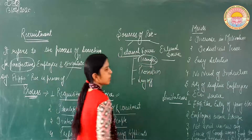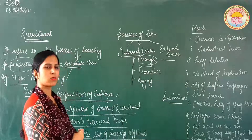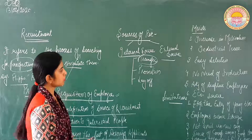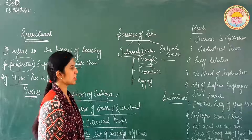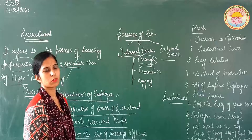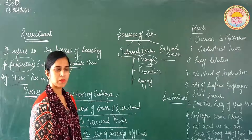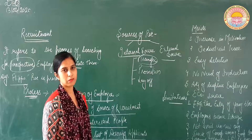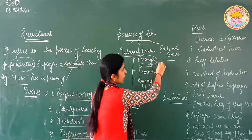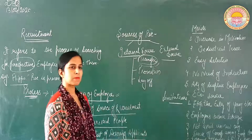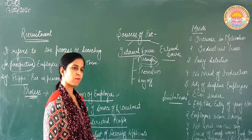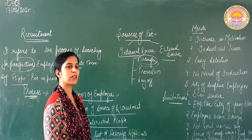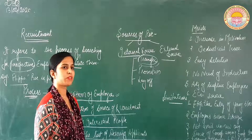Sabse first hai: transfer. Organization mein hota kya hai ki number of employees jab work karte hain, toh kabhi kabhi ek department mein employees hamare jyada ho jate hain, doosare mein kam hote hain — toh kya karte hain, ek department se doosare department mein transfer kar diya jata hai. Kabhi kabhi ek shift mein employees jyada hote hain, toh unko doosari shift mein transfer kar diya jata hai. Isse kya hota hai ki jahan zarurat nahi hai, wahan se employees ko uthaaya jayega, aur jahan unki demand hai wahan unko shift kar diya jayega — hamare organization smooth way se run karta hai.